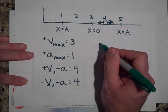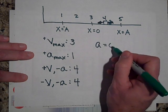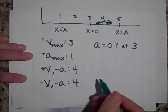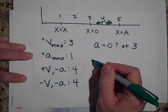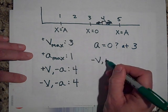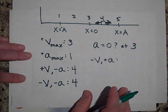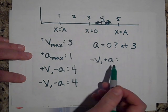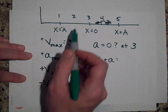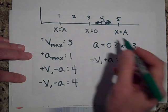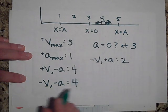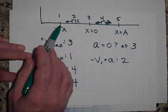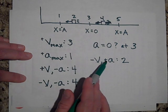Where does the object have an acceleration equal to zero? That is at 3. And where does the object have a negative velocity and a positive acceleration? Having a positive acceleration means it must be in region 1's territory. To have a negative velocity and a positive acceleration means it's slowing down — the spring is crunched up and pushing it back to equilibrium. That is region 2.